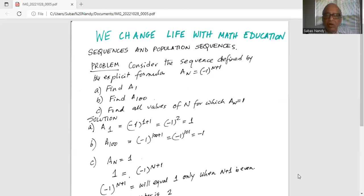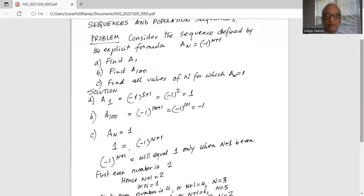In part c, it asks us to find all values of n for which the nth population or Aₙ is equal to 1. So Aₙ equals 1. If we plug it back in the formula, we have 1, which is the value of A subscript n, equals (-1)^(n+1). Now, (-1)^(n+1) will be equal to 1 only when n+1 is even.